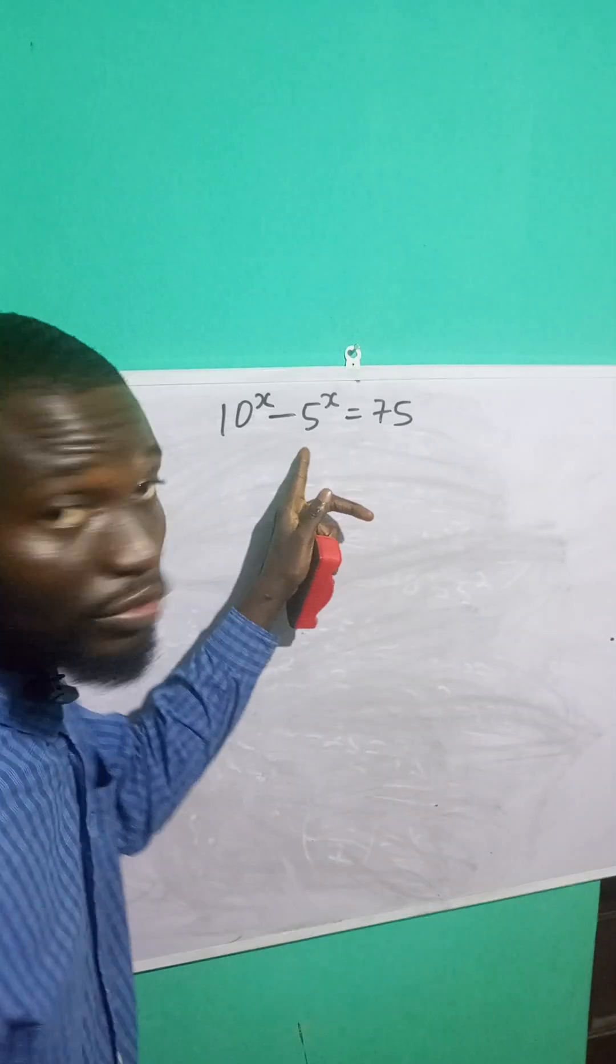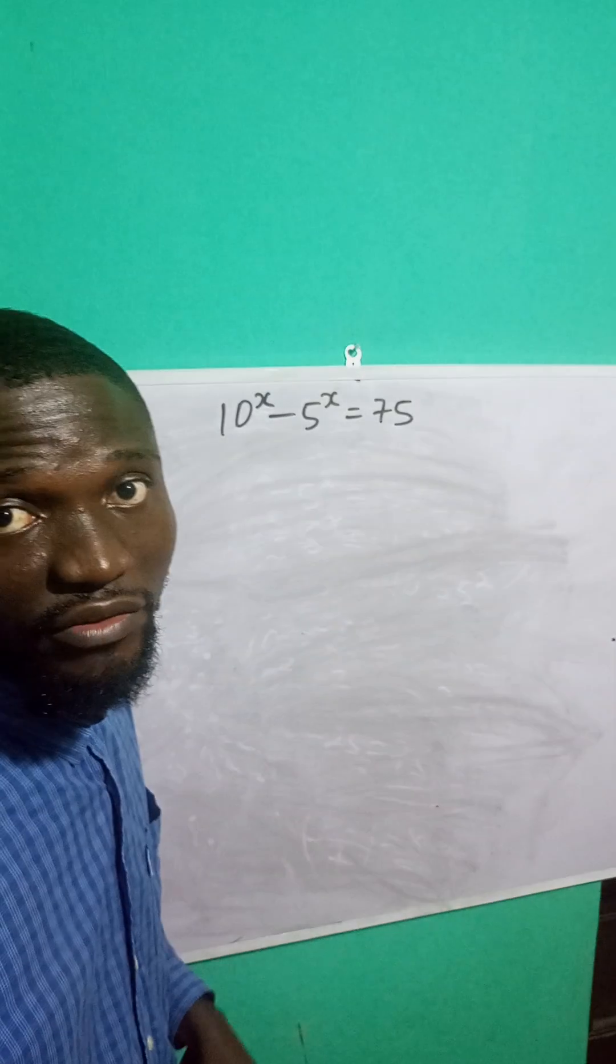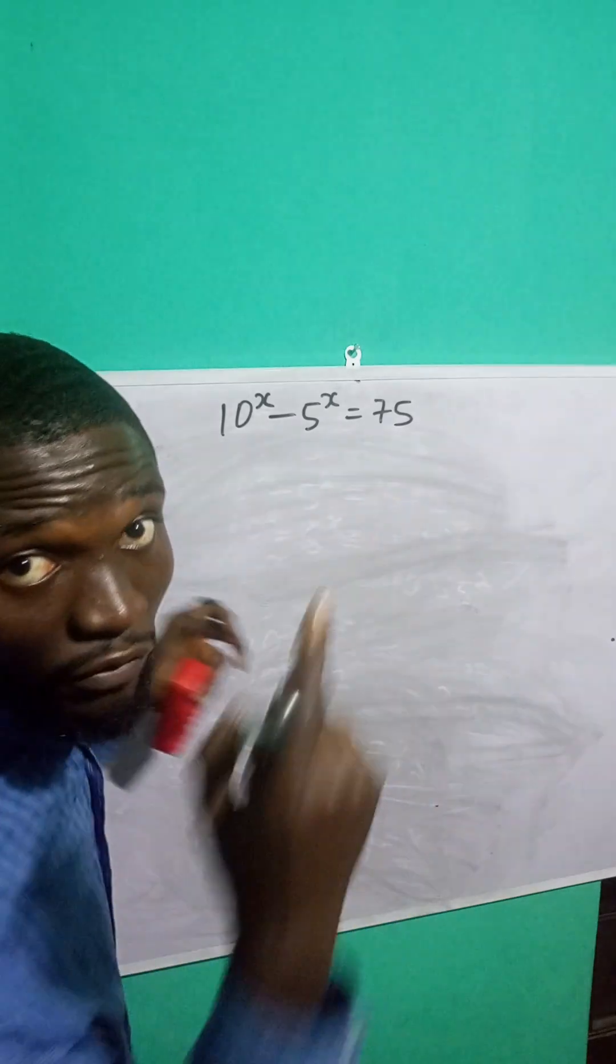So 10 raised to the power x minus 5 raised to the power x is equal to 75. Let me solve for the value of x.